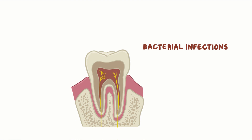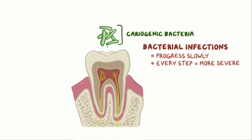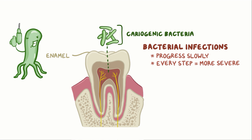Bacterial infections of the tooth and the surrounding tissues progress rather slowly, but every step is so much more severe than the previous one. Cariogenic bacteria will first tear enamel down, then they'll bore through dentin. When they or their toxic waste get into the pulp, pulpitis occurs.